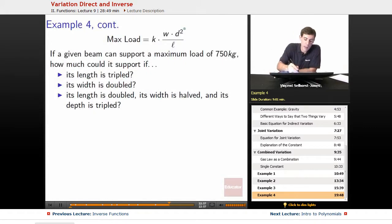Okay, so now that we've got our max load formula here, if a given beam can support a maximum load of 750 kilograms, how much could it support if its length is tripled, or its width is doubled, or its length is doubled, its width is halved, and its depth is tripled? Wait a second. We don't have any information. The way we did all of these previous problems was they gave us enough to figure out k, and then we used k to figure out the rest of these problems. We don't have any specific numbers to work with, so what are we going to do?